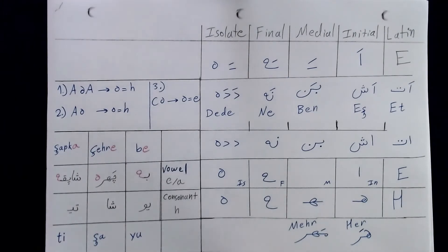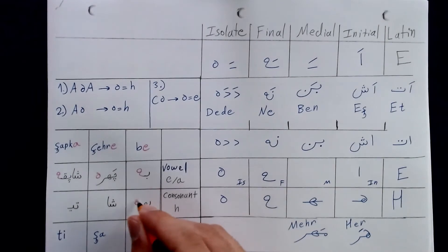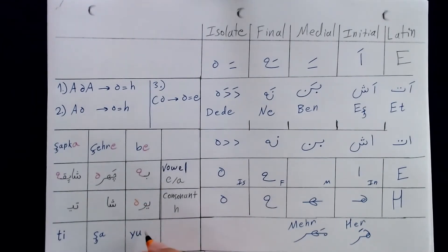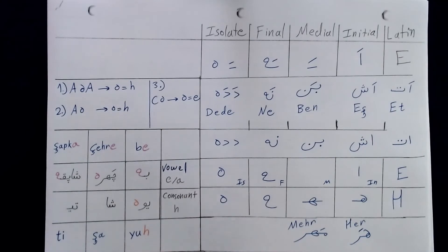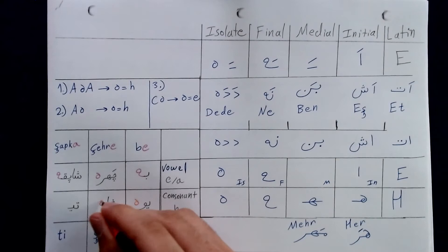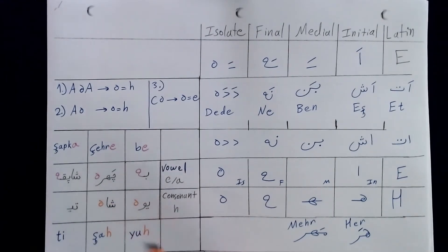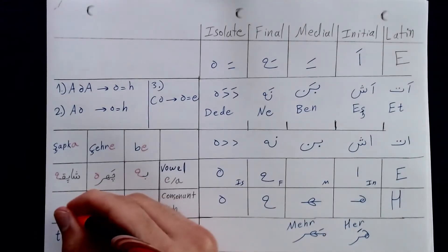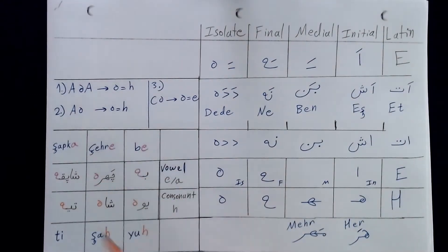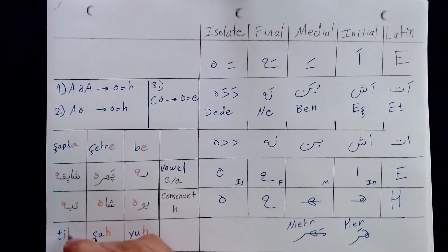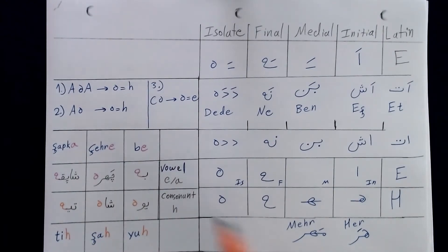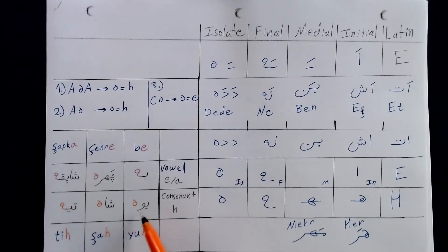Now let's look at when the letter H is preceded by a vowel. Here, this would become Yuh — it's a consonant. Here, Shah — this too is a consonant. And here as well, this is Tih. In each of these cases, the letter H is being preceded by a vowel, confirming it is a consonant.